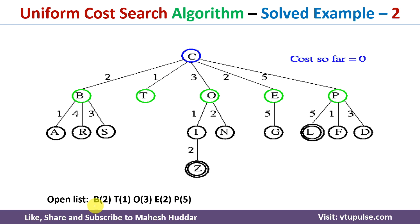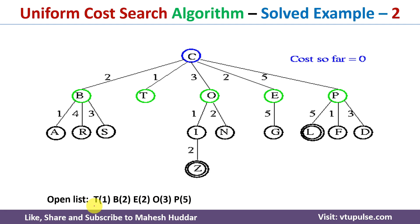I will add all those possible paths into the open list. The meaning of B2 is that to reach B from C, the cost is 2. Similarly, other paths are added into the open list. Once all paths are added, we sort them in ascending order of cost. After sorting, T1 is first, B2 is second, and so on.